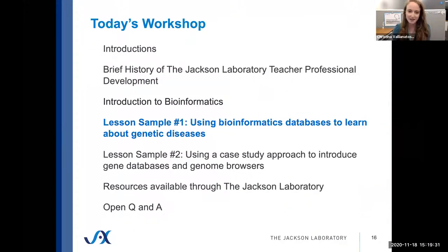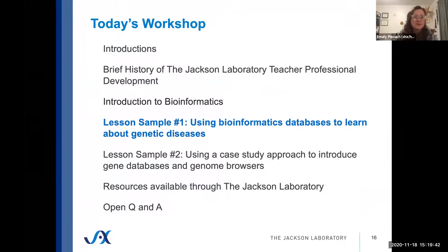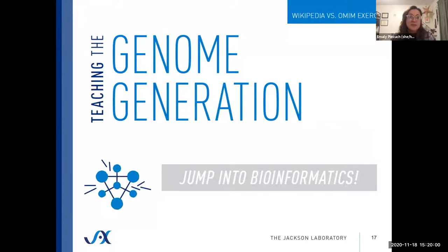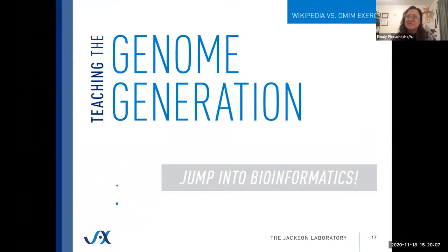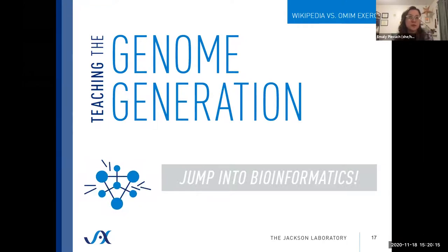Now let's try out one of these lessons — one as simple as checking out an online database and making some comparisons. This is one of our TTGG lessons called Jump Into Bioinformatics, also called the Wiki versus OMIM exercise. It can be done as an interactive class lesson or asynchronously as a remote one. It's available today, and also online at jax.org. This lesson is designed to guide students to learn more about various sources of online human genetic information.